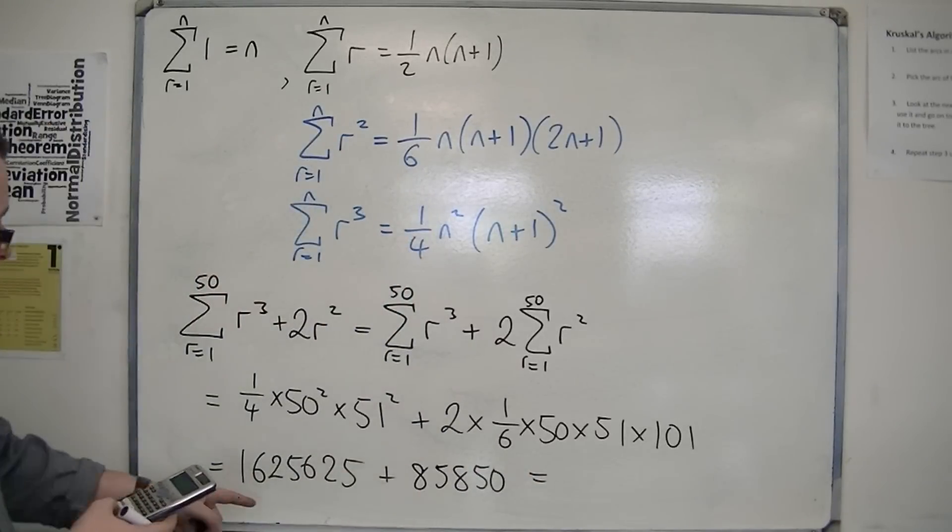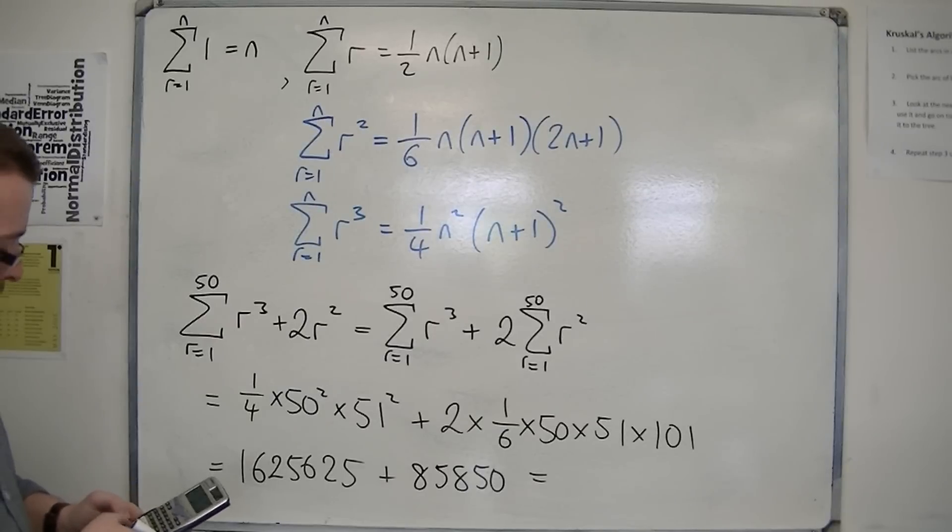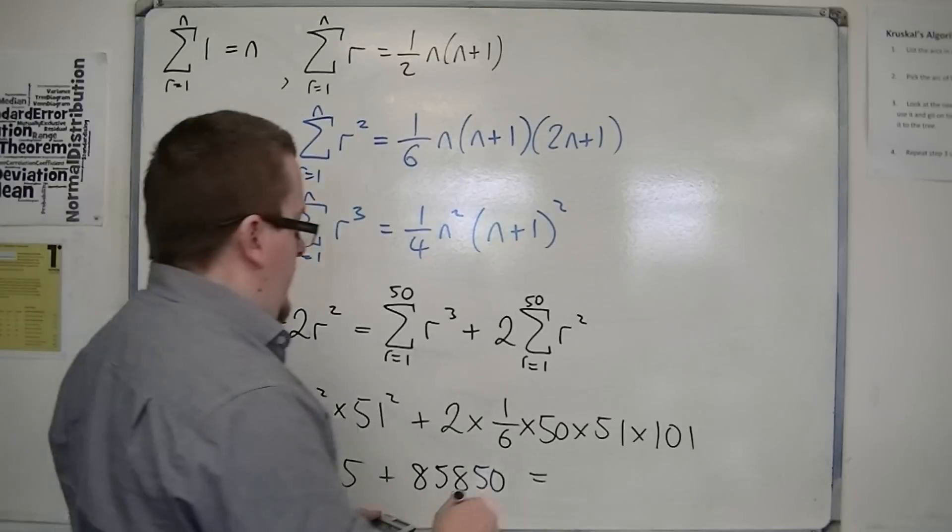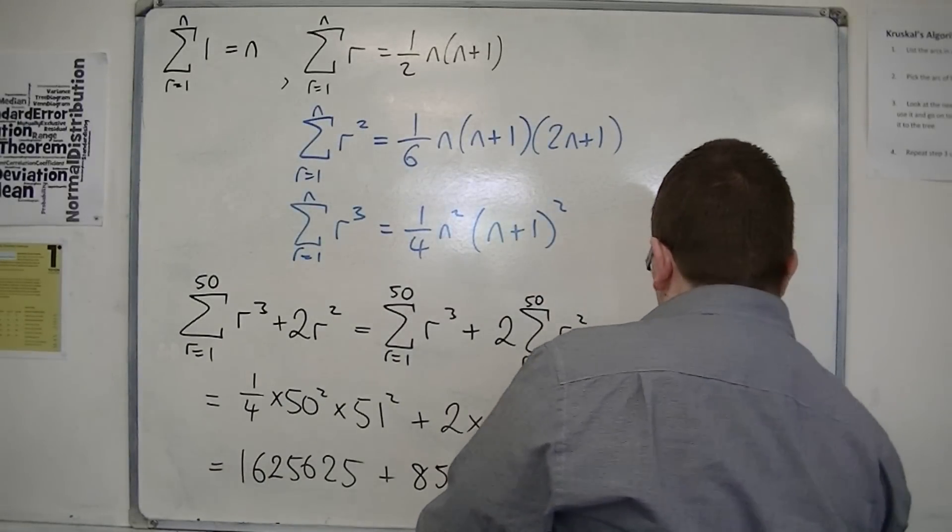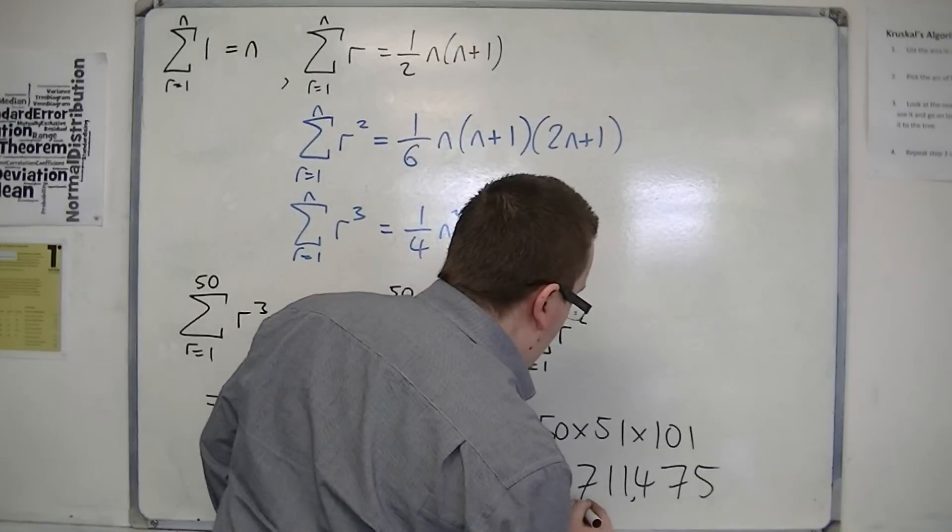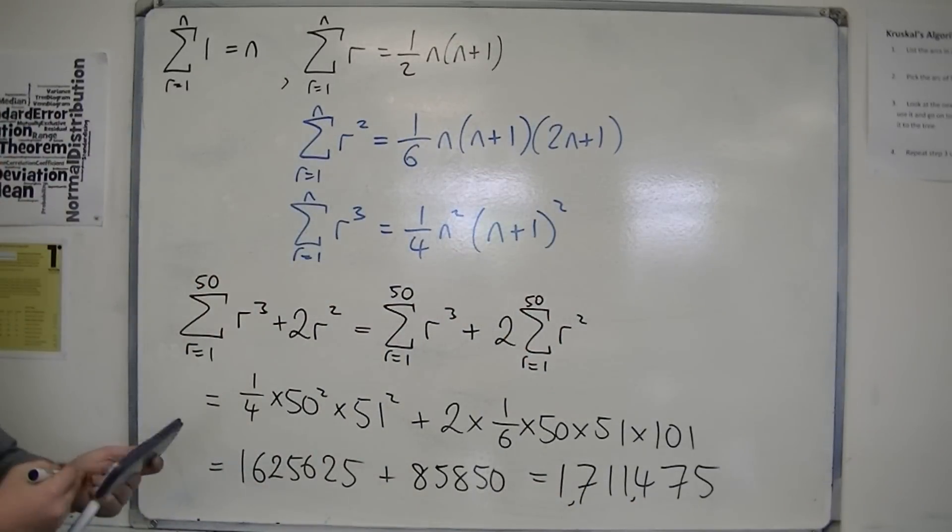So if we add these together, I get 1,711,475. So that's how this notation can work.